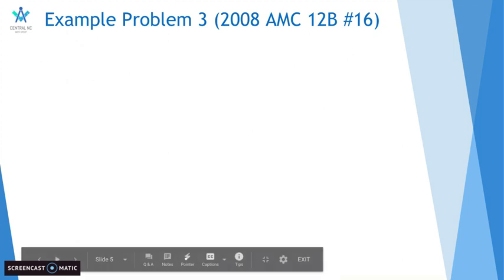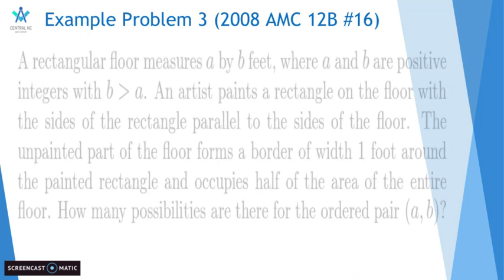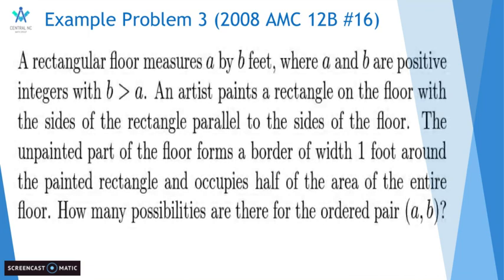Our last example problem will be 2008 AMC 12B number 16. A rectangular floor measures a by b feet, where a and b are positive integers, with b greater than a. An artist paints a rectangle on the floor with the sides of the rectangle parallel to the sides of the floor. The unpainted part of the floor forms a border with one foot around the painted rectangle, and occupies half of the area of the entire floor. How many possibilities are there for the ordered pair (a, b)?